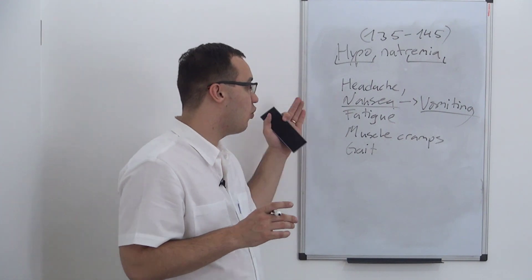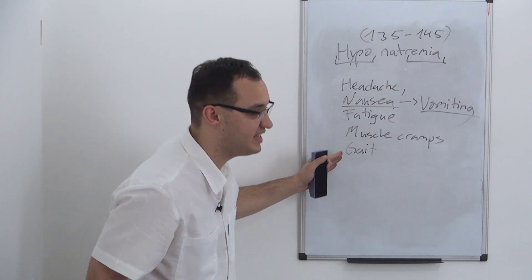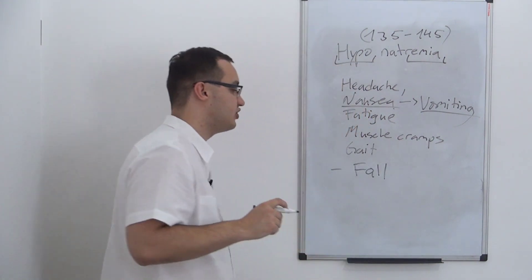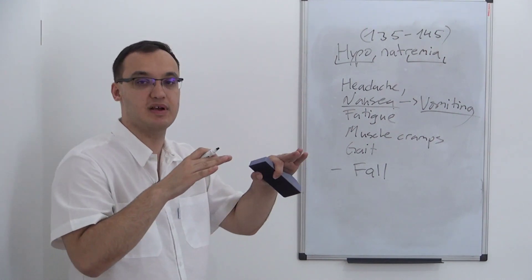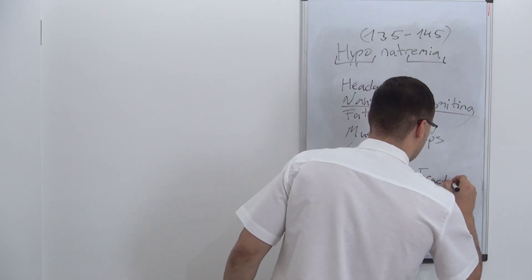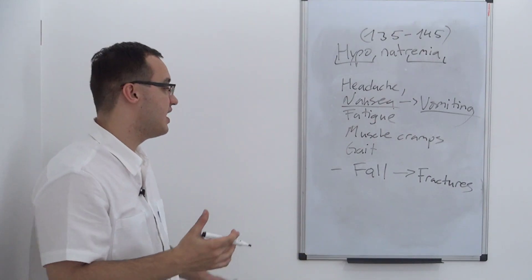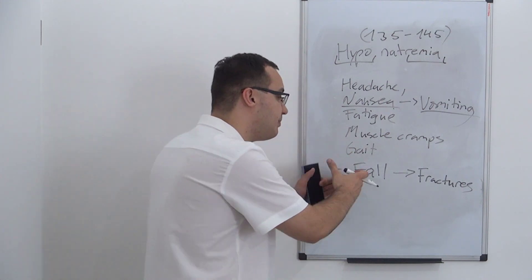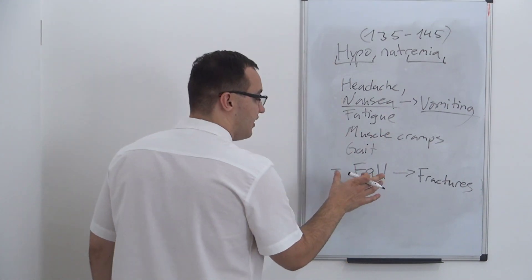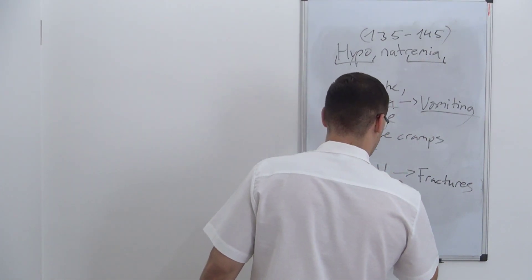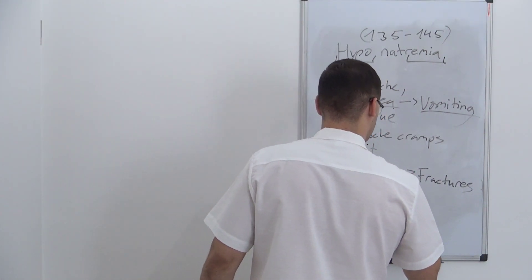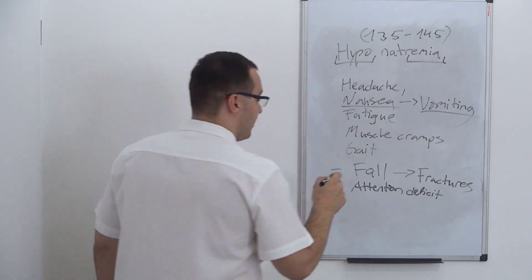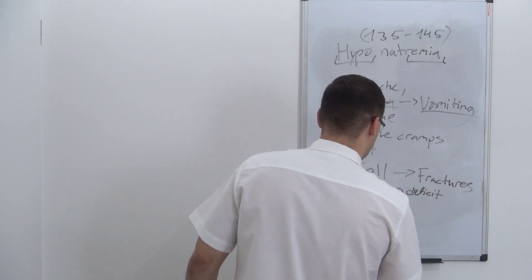To recap, the most common symptoms are headache, nausea, vomiting, fatigue, muscle cramps, and gait disturbances. There are also other important effects: elderly patients with hyponatremia or chronic hyponatremia are usually falling easily, which can lead to fractures. If you always have hyponatremia and you keep falling and getting fractures, please try to treat the hyponatremia — because elderly patients also get worse attention and concentration deficits with low sodium.